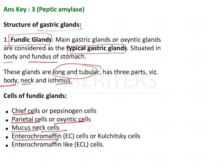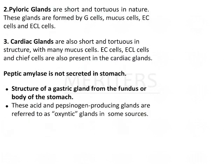Enterochromaffin-like cells, also known as Kulczewski's cells, produce histamine, which increases acid secretion. Then we have the pyloric gland, which is formed by G cells, mucus cells, EC cells, and ECL cells.